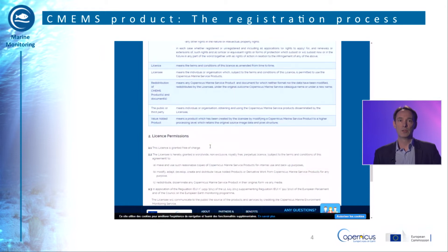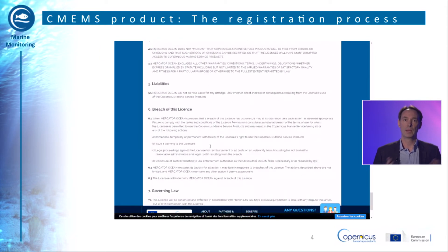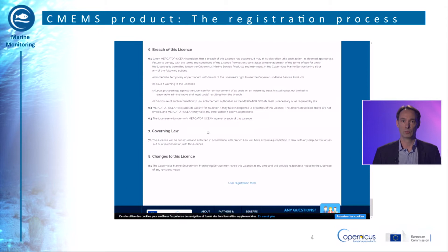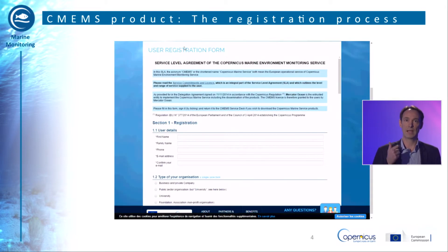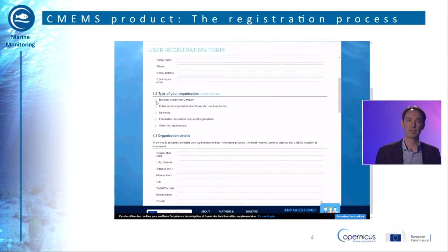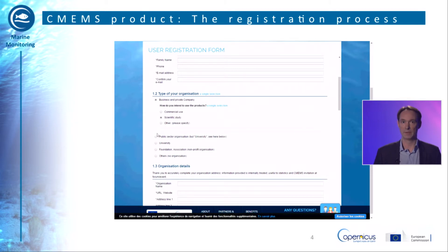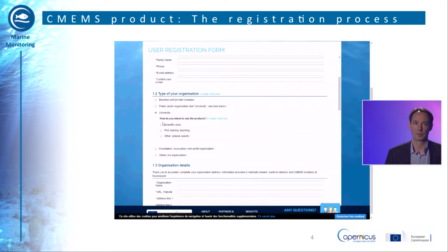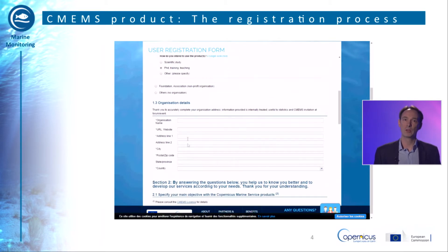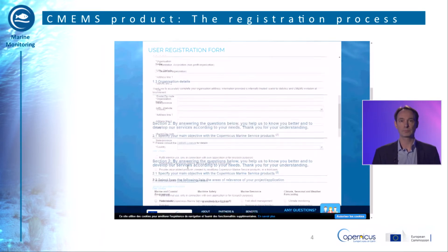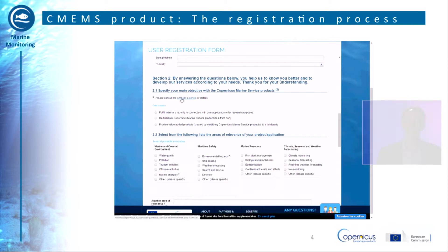Returning to the user registration form, you can complete the requested information about you, such as your user details, type of organisation, organisation details, or areas of relevance for which you would like the product. You can activate several sections and also mention how you heard about CMEMS. At the bottom of the page, you have to sign the service level agreement by accepting the terms and conditions of the CMEMS license, then enter the proposed code and send the form.